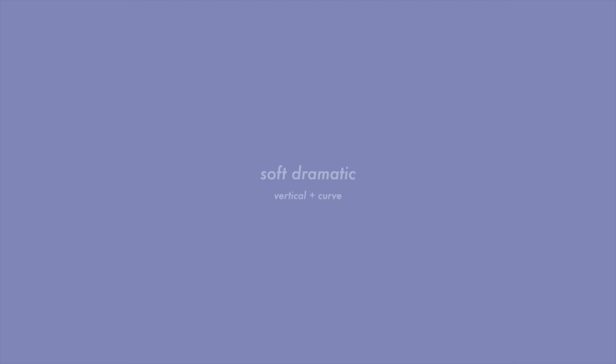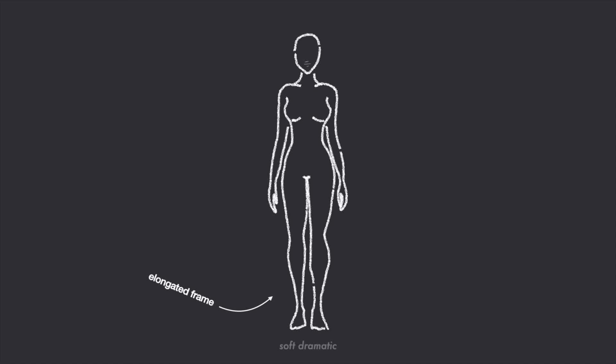Soft Dramatic: vertical and curve. If you have the soft dramatic body type, then your dominant features are vertical and curve. This combination results in a naturally elongated hourglass figure. The soft dramatic has a long and angular bone structure with soft flesh that creates a lush, curvy, and elongated silhouette with a defined waist. Her facial features are also full and lush, often with large rounded eyes and full lips, combined with sharpness in the nose, cheekbones, or chin.